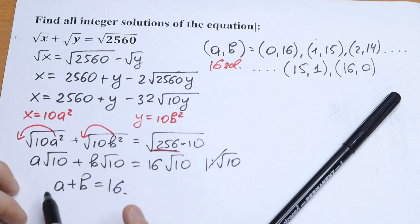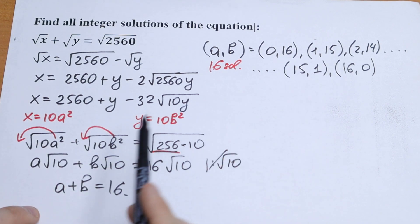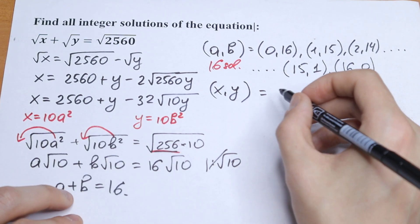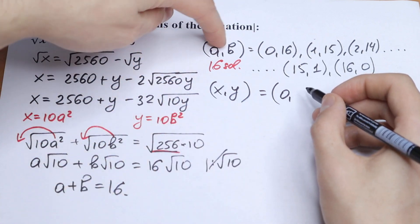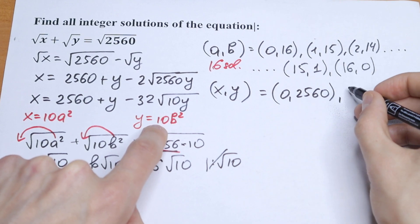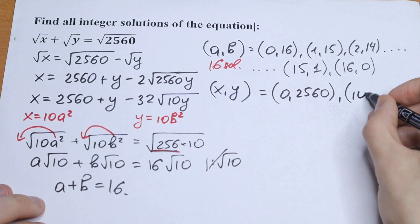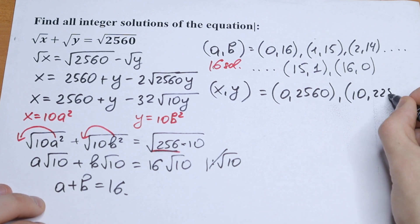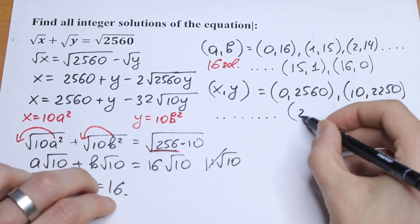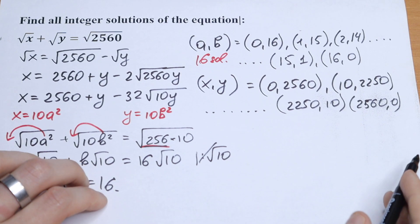If we plug in these 16 solutions, we get the correct equation. We need to write the solutions in terms of x and y, not a and b. So plugging back in using x = 10a² and y = 10b², the first pair gives (0, 2560), the next gives (10, 2250), and continuing through all cases. The previous one will be (2250, 10) and the last one (2560, 0). So we will have 16 cases in total.